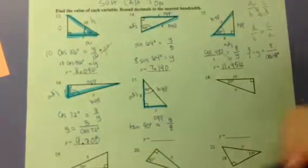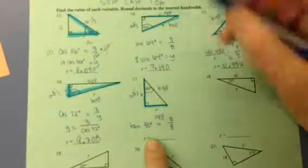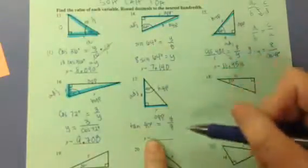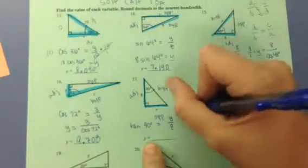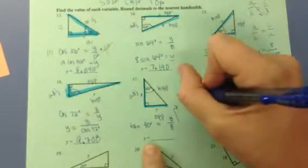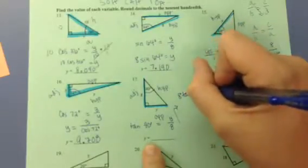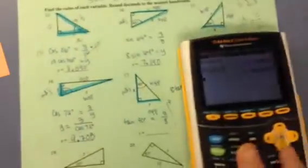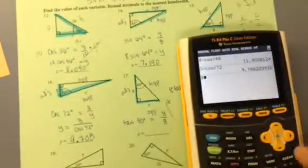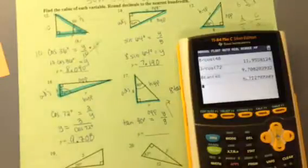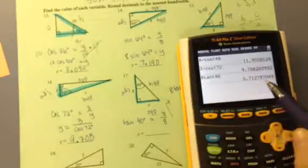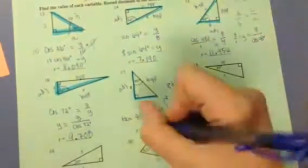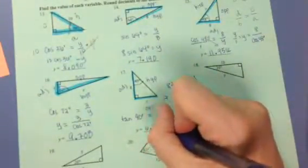This is going to be like those first two problems we did where we had the variable on top. So I'm going to multiply both sides by 8. I'm going to get 8 tangent of 40 degrees equals y. So I go to my calculator, 8 tangent of 40. I get 6.7127. I'm going to round to 6.713.